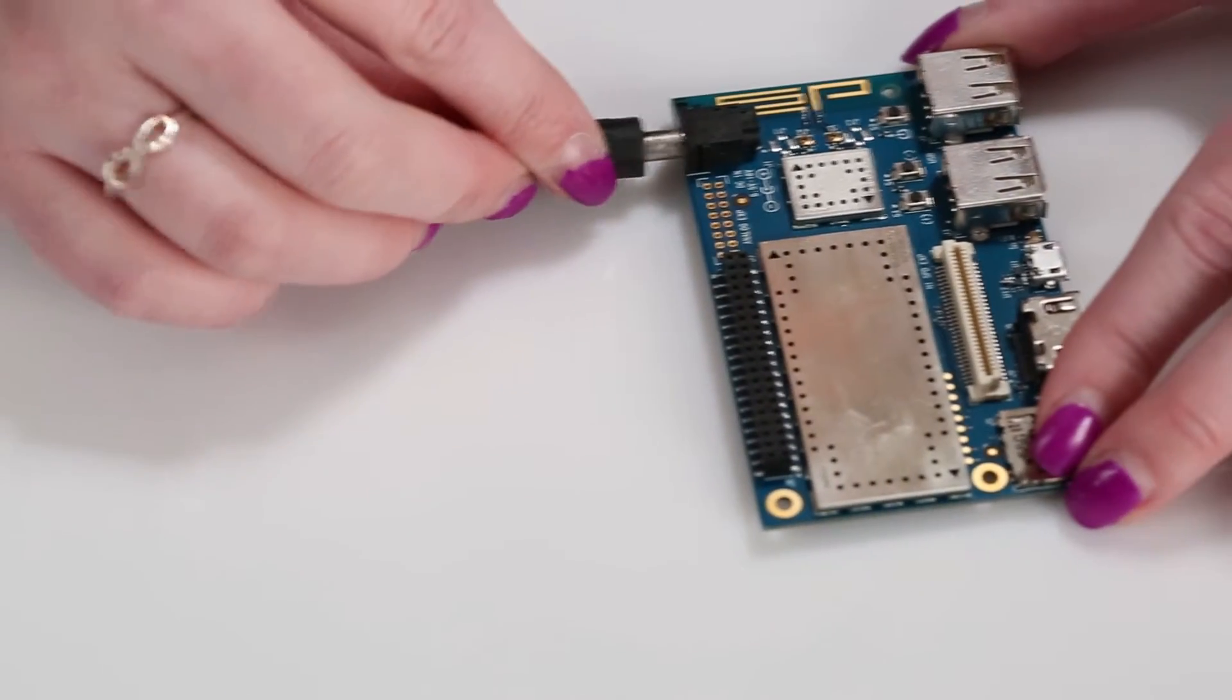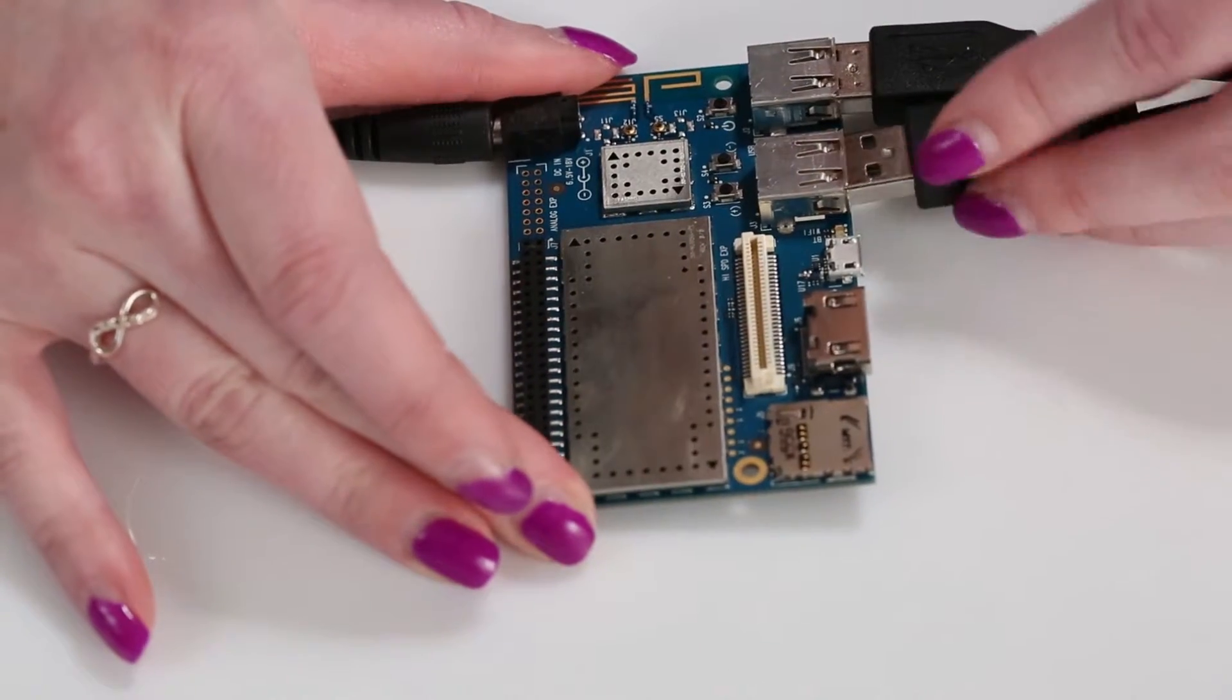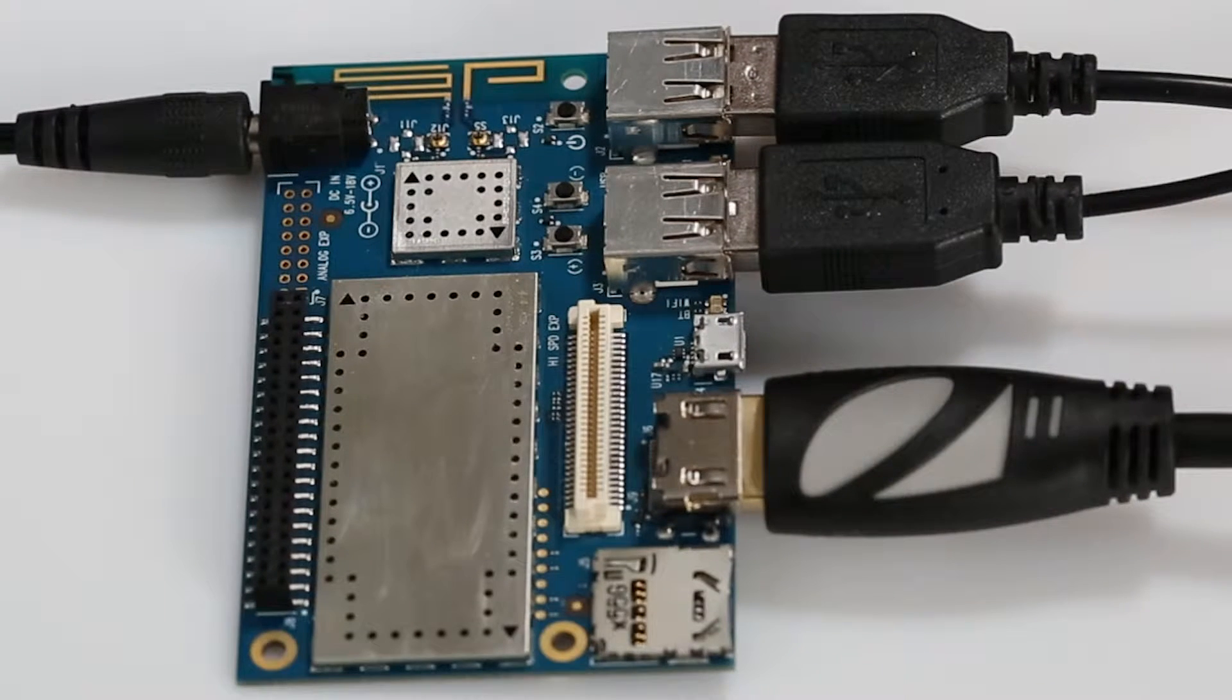Out of the box, the DragonBoard comes preloaded with Android. This means if you have a power supply, a USB keyboard and mouse, and an HDMI monitor, you have a computer. The DragonBoard will connect to your Wi-Fi, and the same Qualcomm Vive connectivity module gives you Bluetooth and FM capabilities as well.